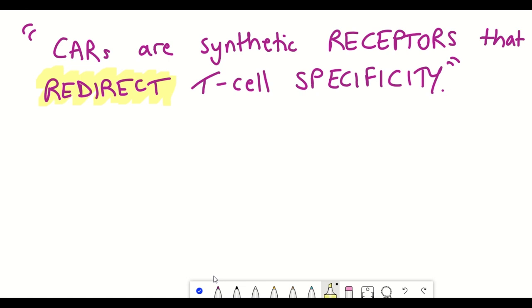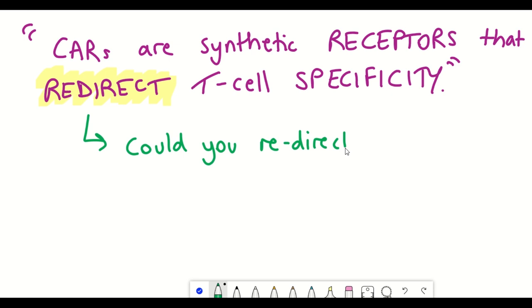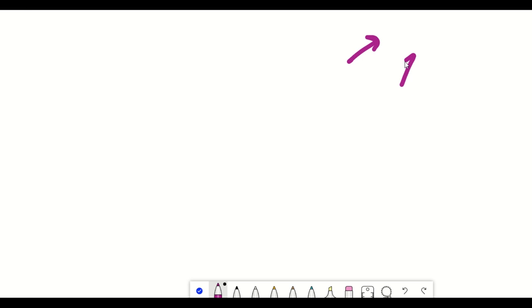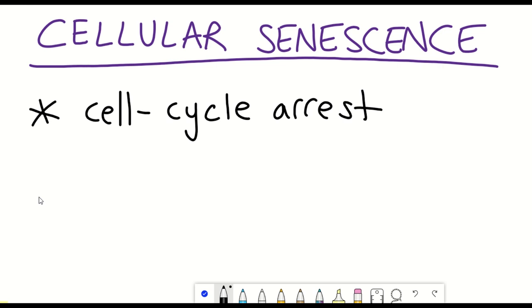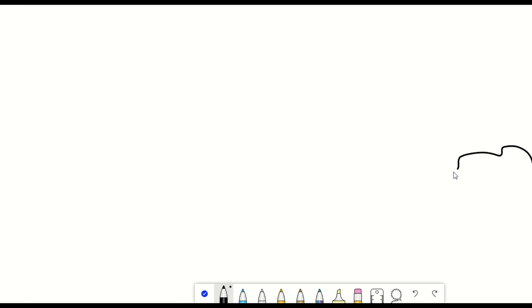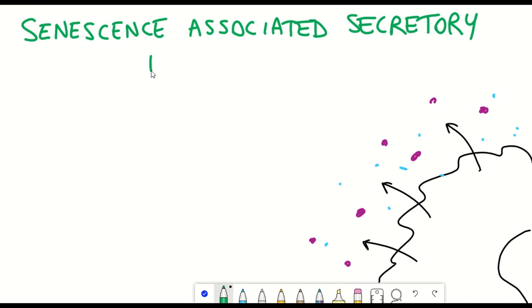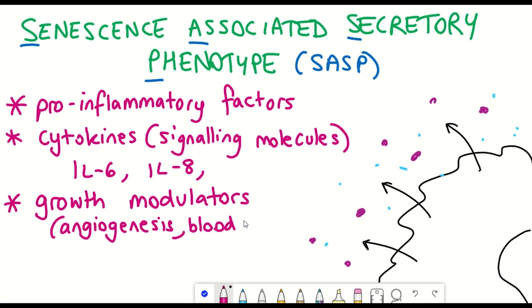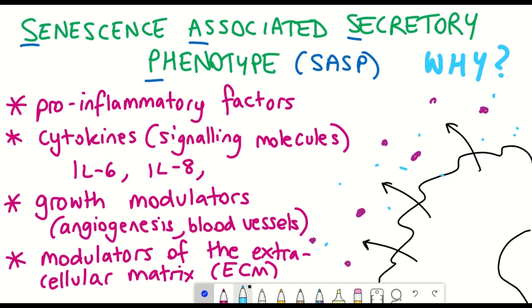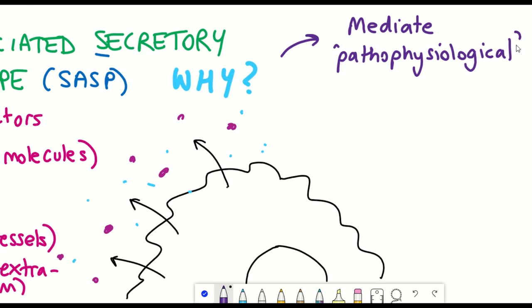Given that you now understand what CAR T-cells are and how they can be used to target cancer cells, can they now be used to target senescent cells? So firstly, what are senescent cells? Senescent cells are cells that have undergone cellular senescence, characterised by two major hallmarks: a stable cell cycle arrest, and a secretory phenotype that modulates the surrounding environment. Senescent cells have beneficial features such as acting as a tumour suppressive mechanism and roles in wound healing. However, they also accumulate with age, and due to their secretory phenotype they can promote a pro-inflammatory phenotype resulting in chronic inflammation.